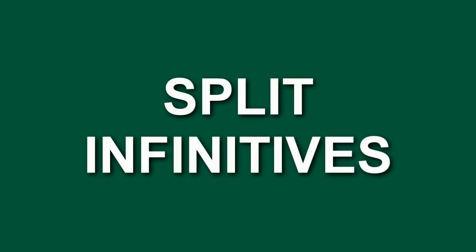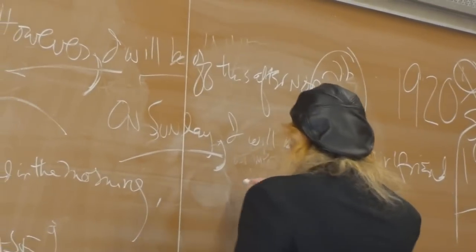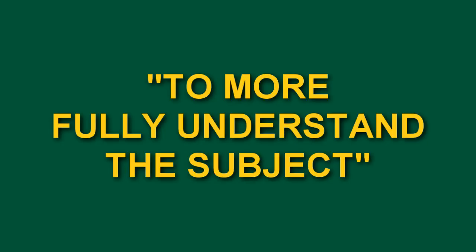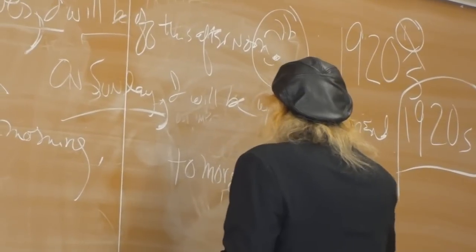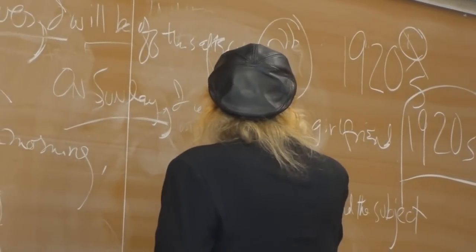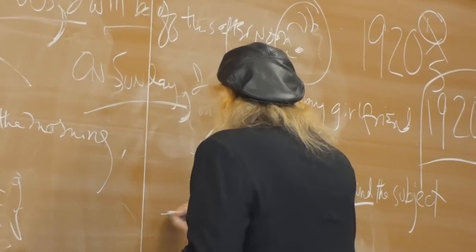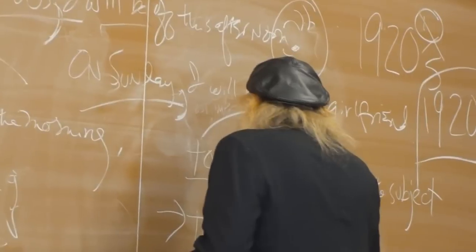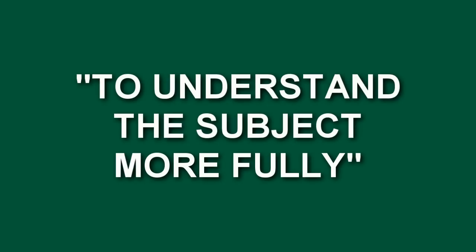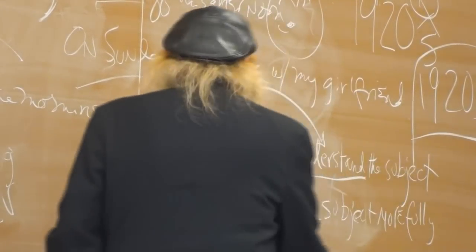Another thing that writers do a lot is split infinitives. What that means is if you have the word 'to' followed by a verb — say, 'to more fully understand the subject' — here 'to' and 'understand' are split apart. You want to keep 'to' and the verb next to each other. So it should be 'to understand the subject more fully,' because 'more fully' is the adverb. Keep 'to' next to the verb rather than splitting it up.